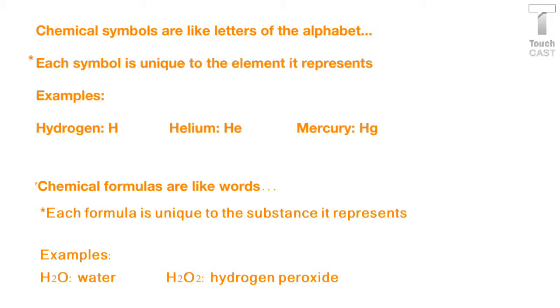You have A, B, C, D, all the way to Z, and each letter has a different sound. Well, chemical symbols are the same way. Each symbol is unique to the element it represents. I've given you three symbols.